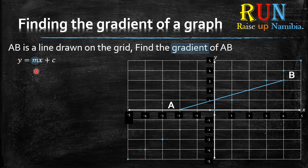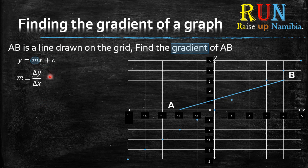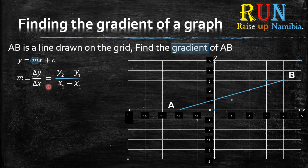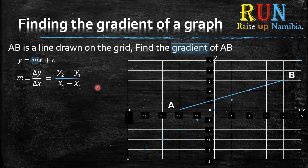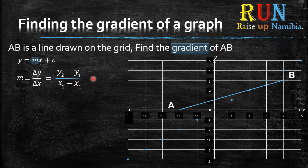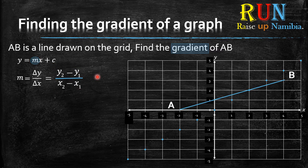Now, how do we calculate that M? M is basically equals to the change in Y divided by the change in X. Or, in other words, we can use this formula, which is Y2 minus Y1 divided by X2 minus X1. If you don't understand what's going on here or how to use this formula, don't worry. We will get into examples that will enlighten your understanding.